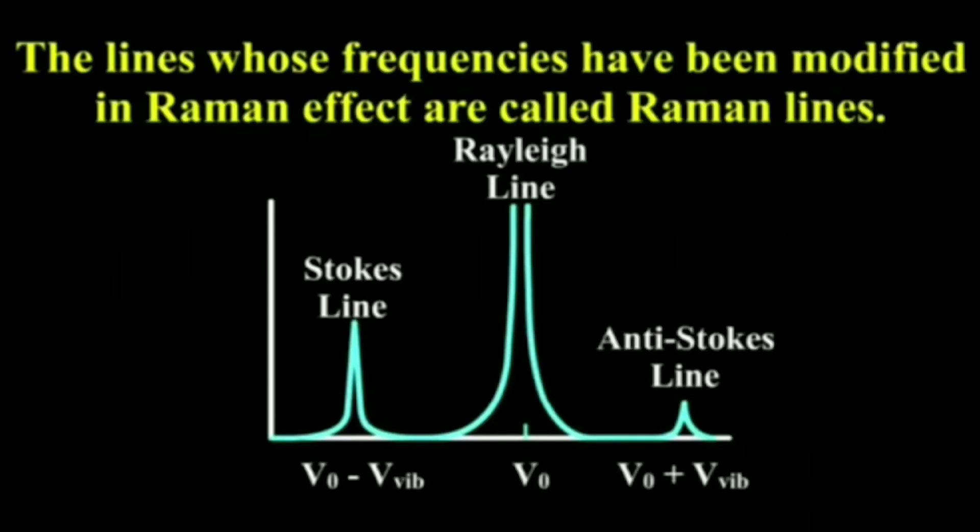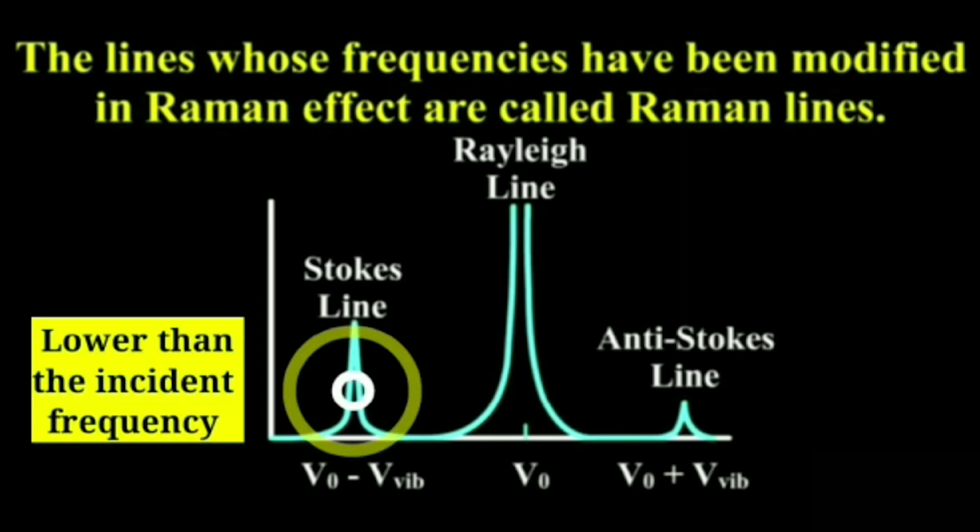The lines whose frequencies have been modified in the Raman effect are called Raman lines. The lines having frequencies lower than the incident frequency are called Stokes lines.